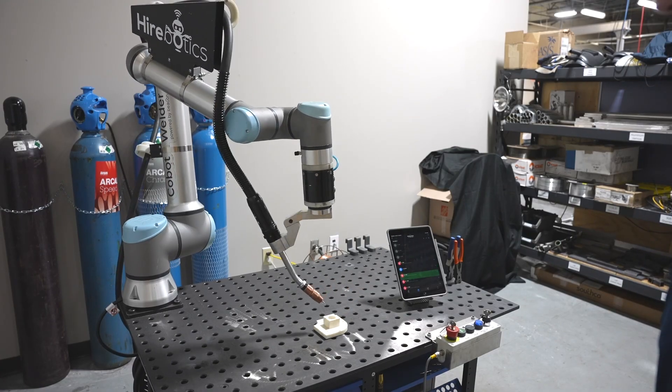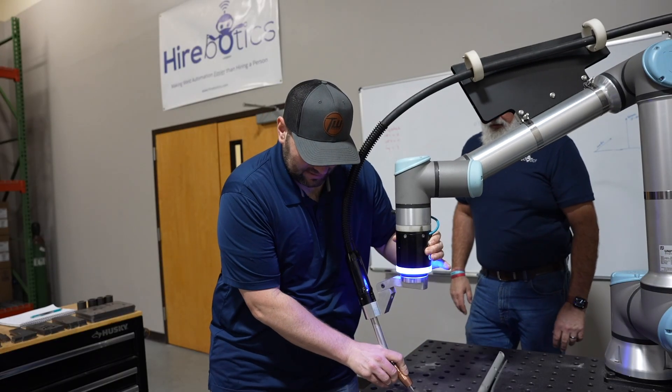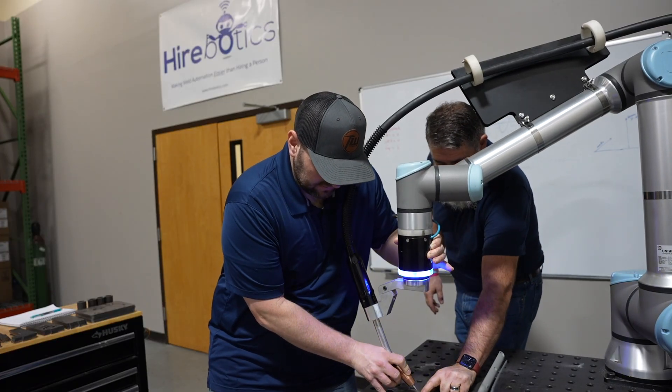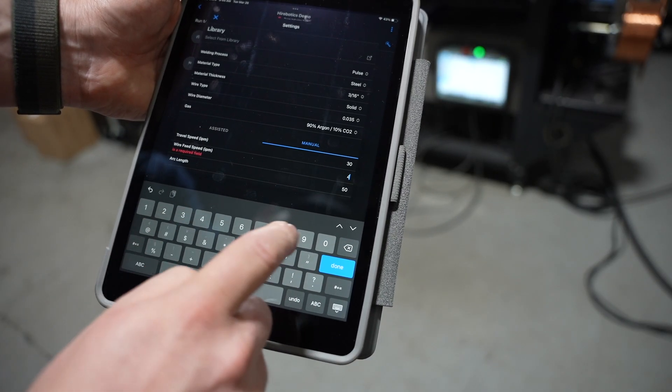The technology that's changing all of that is the cobot. These are smaller specialized robots that run on a welding table similar to what I have in my shop. They can be programmed by physically moving the arm around and entering settings on a tablet, requiring very little expertise and training.